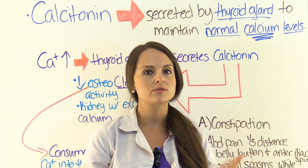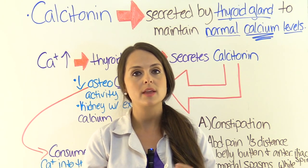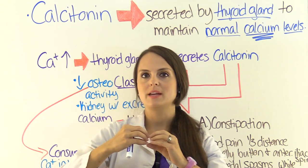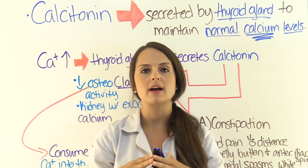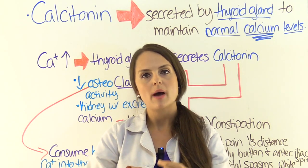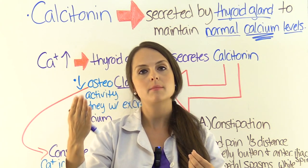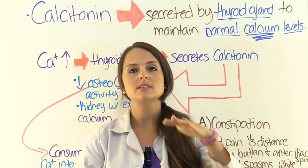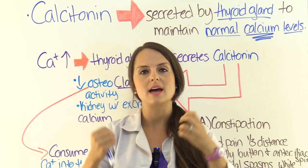Osteoporosis is thinning of the bones — specifically that spongy bone inside them. It's already naturally porous, but it becomes increasingly porous, which lowers our bone density, putting patients at risk for easy fractures. Inside that spongy bone, osteoclasts consume the material in that matrix — specifically calcium — and put it back into the blood system. Osteoblasts then take that calcium and build up the bone matrix, keeping it nice and strong.